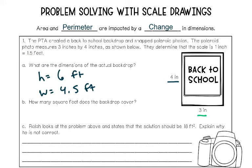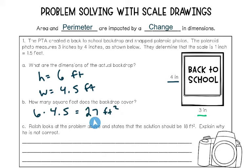The next question asks how many square feet does the backdrop cover. When a question asks about square footage, it's asking about the area — how much space is going to be covered, like carpet in a house. So you need to use the formula for area of a rectangle: length times width. You have the height of 6 feet and the width of 4.5 feet — multiply those. After multiplying, I got 27 square feet. That's how many square feet the actual backdrop covers.